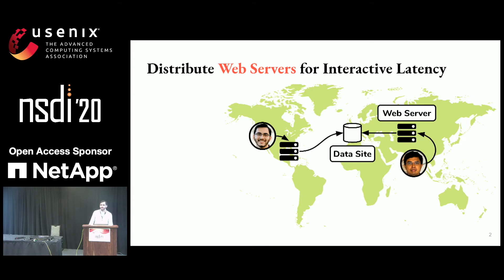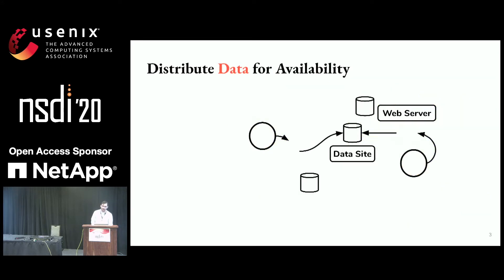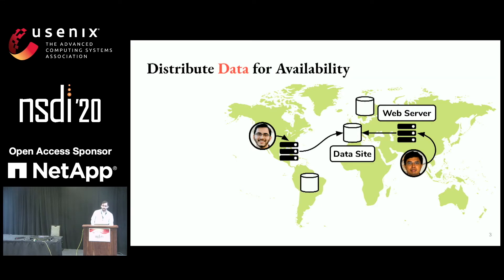If this shared storage is located in a single location, and that data center fails, we can't access the data anymore, which would be unfortunate. So we can introduce additional data sites, which can ensure availability of the data even when that site goes down.